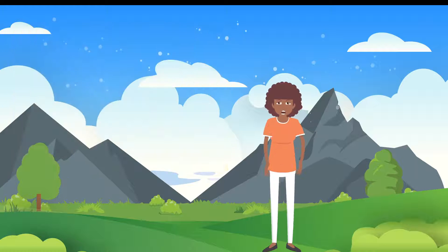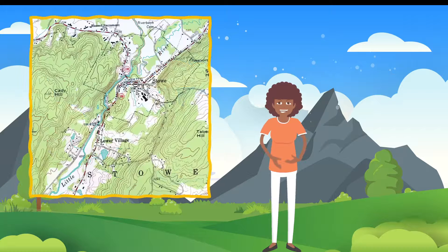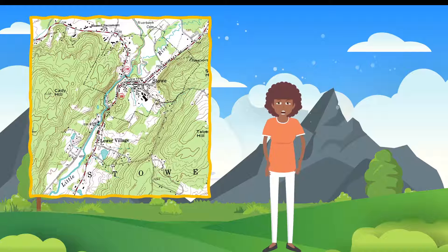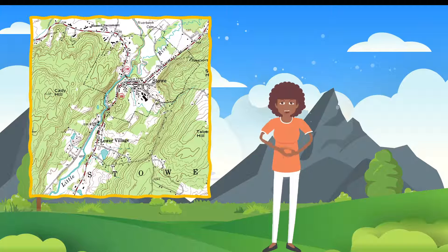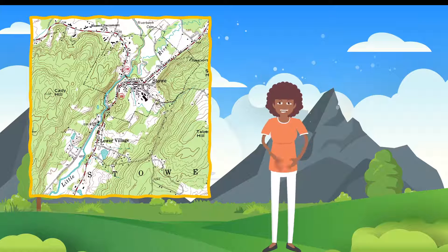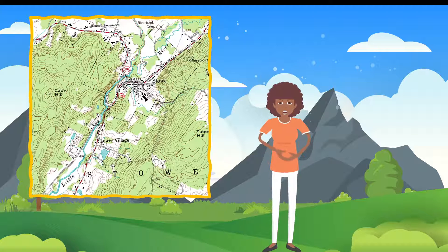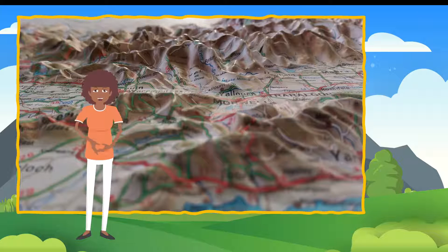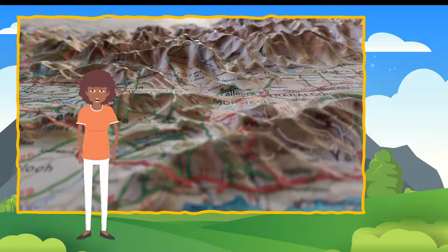Other maps show us what the terrain of an area looks like — that is, where landforms and bodies of water are. The kind of map that shows us how tall a mountain is, or how wide a lake is, is called topographic. But what are landforms and bodies of water?